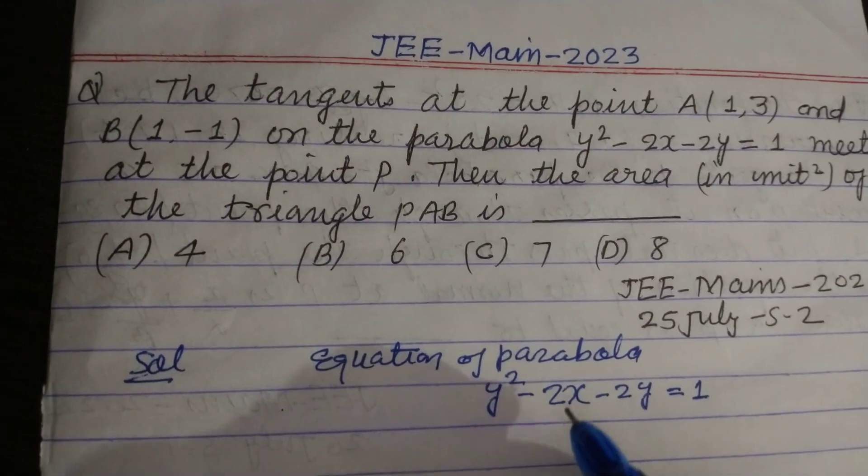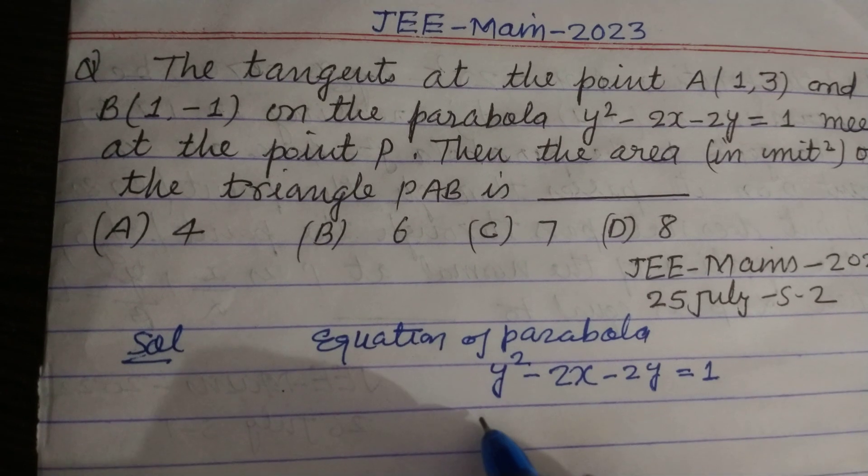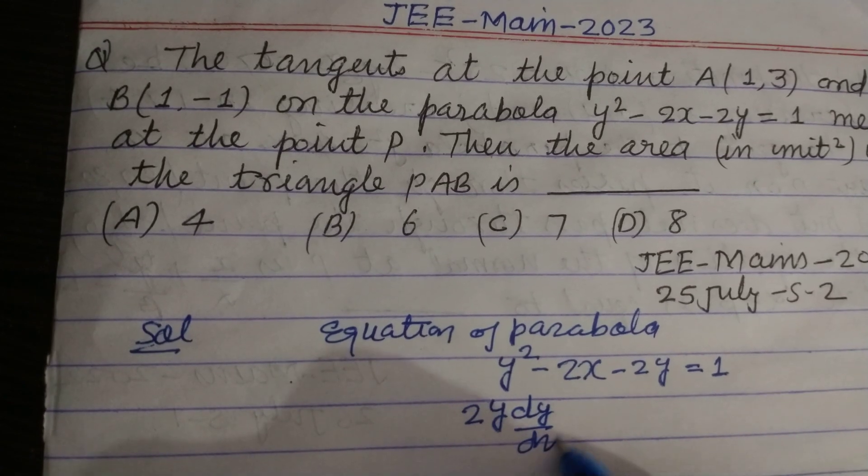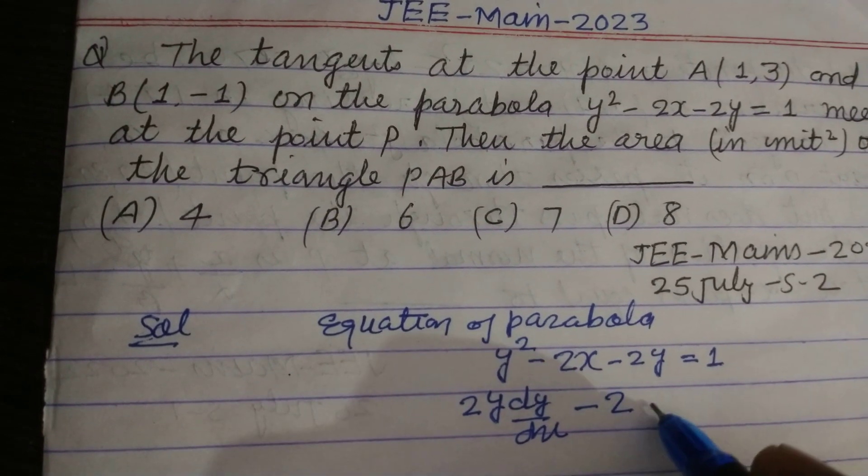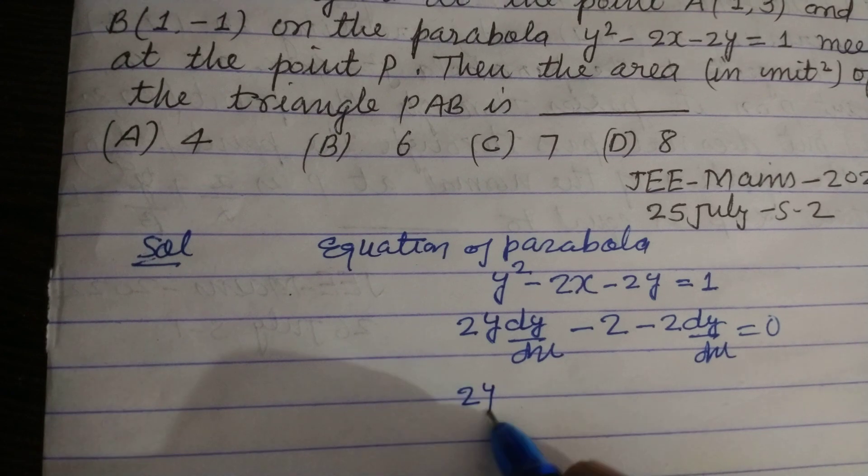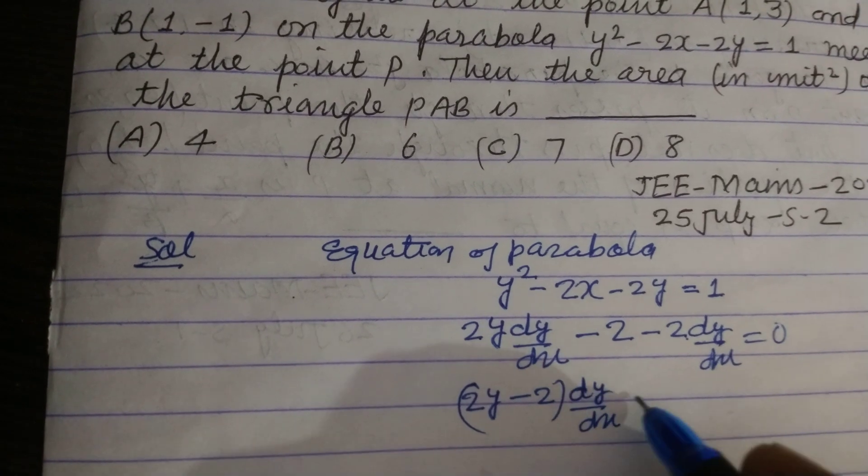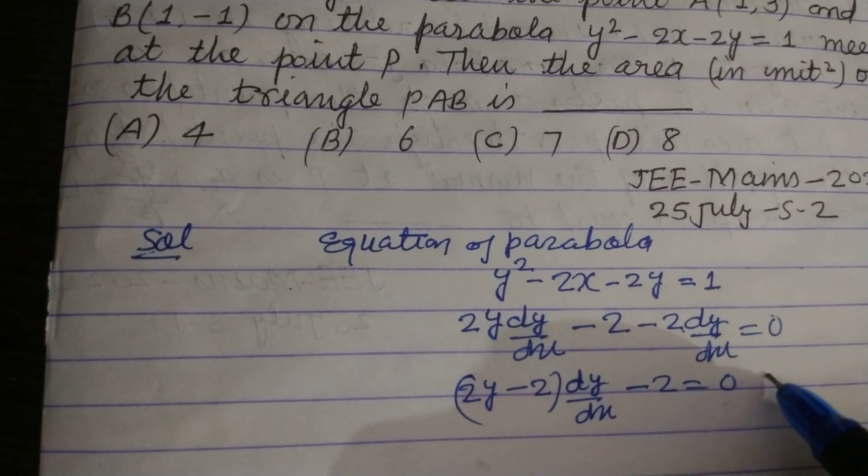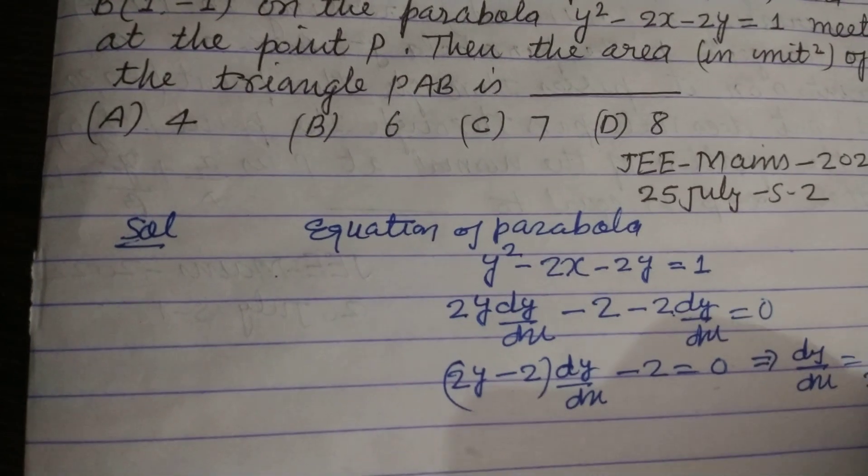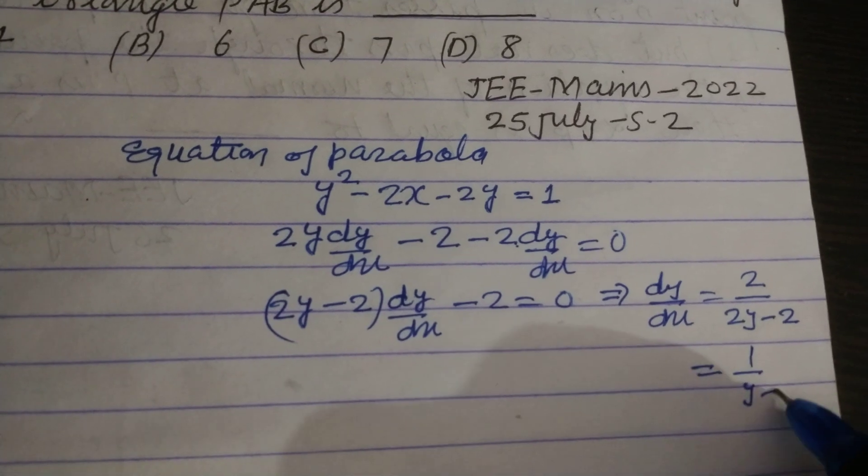We find the tangent at point A and B. So differentiating this with respect to x, so 2y dy/dx - 2 - 2 dy/dx = 0. So 2y - 2 dy/dx - 2 = 0. From here we got that dy/dx = 2/(2y - 2), so 2 cancelled, we got 1/(y - 1).